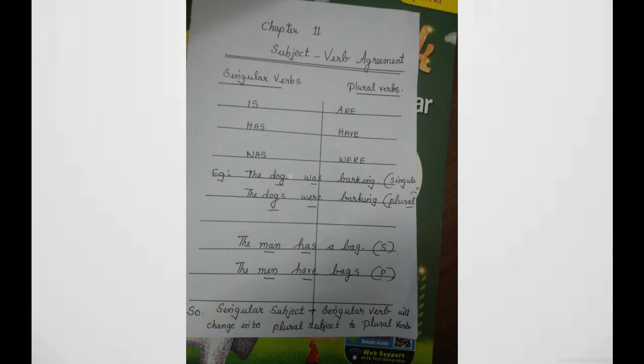Here, one example is given: 'The dog was barking.' It is in singular form. When we write it in plural: 'The dogs were barking.'